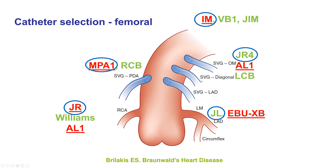For left-sided grafts, JR4 is often successful for diagnostic angiography, or the Left Coronary Bypass, or LCB catheter, but for PCI, AL1 provides more support. For internal mammary, the JR4 can often engage the IMA graft. However, for PCI, or in cases of difficulty engaging, one can use the VB1 or the GEM catheter.